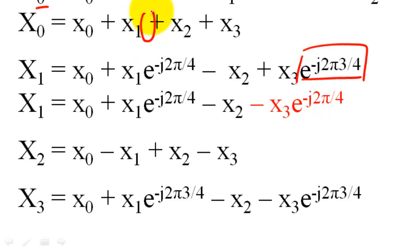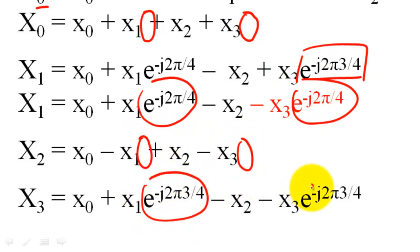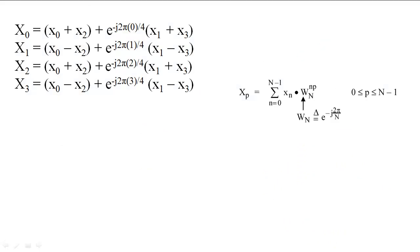If we look at all four DFT samples, we see that X sub 1 and X sub 3 always have the same W sub n components. So, let's rearrange the expressions to exploit this property.